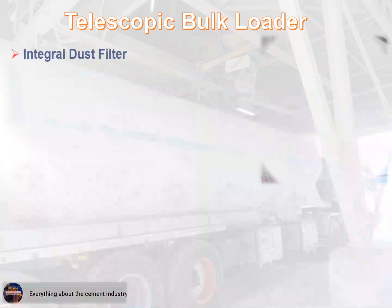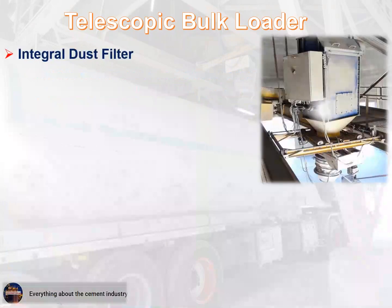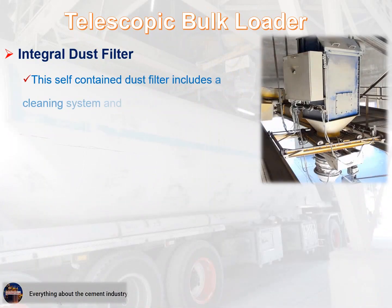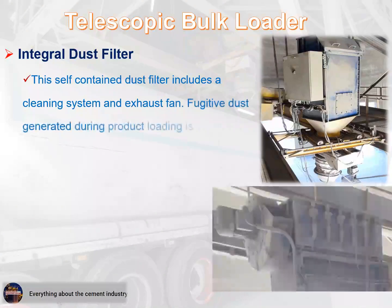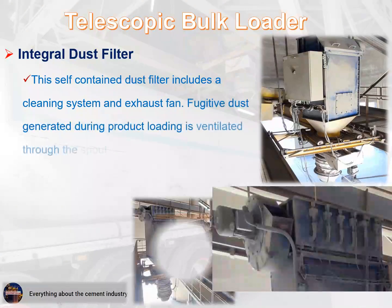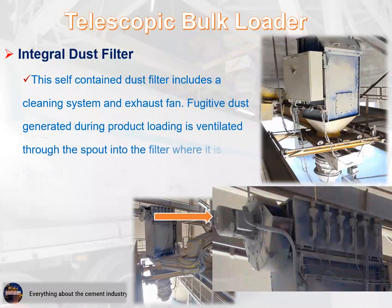Integral dust filter: this self-contained dust filter includes a cleaning system and exhaust fan. Fugitive dust generated during product loading is ventilated through the spout into the filter, where it is recycled back into the material flow.